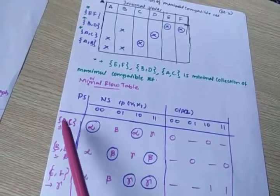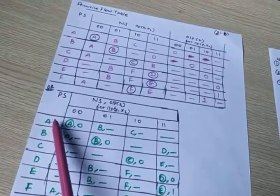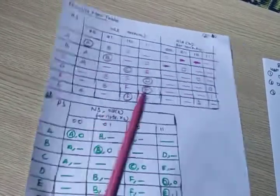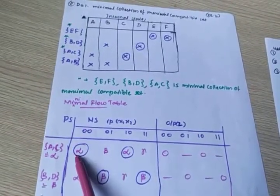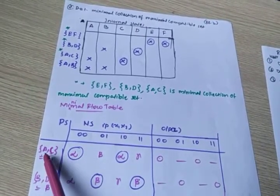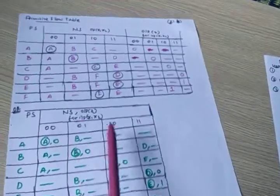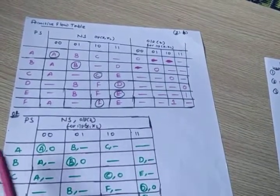For the state A, input 0,0: look at the diagram. For A with input zero-zero, the next state is A only, and C with input zero-zero also gives A only. So instead of A, you write ALPHA here. For A with input zero-one, the next state is B. Since B and D are represented by BETA, you write BETA here.